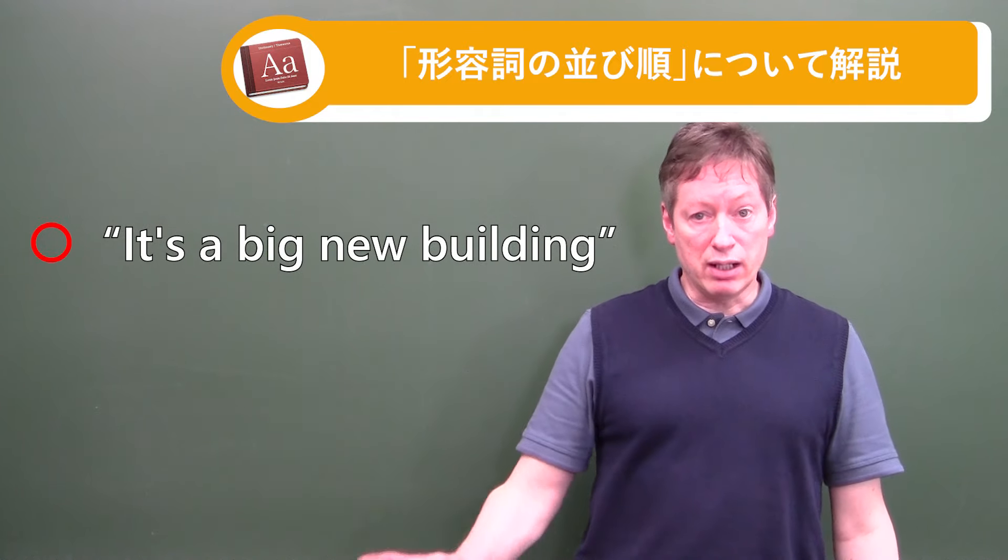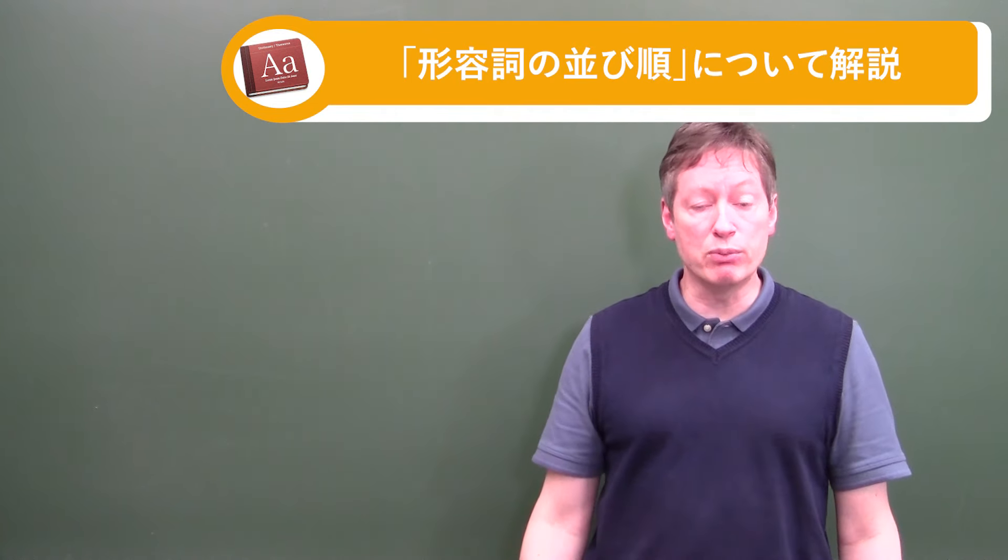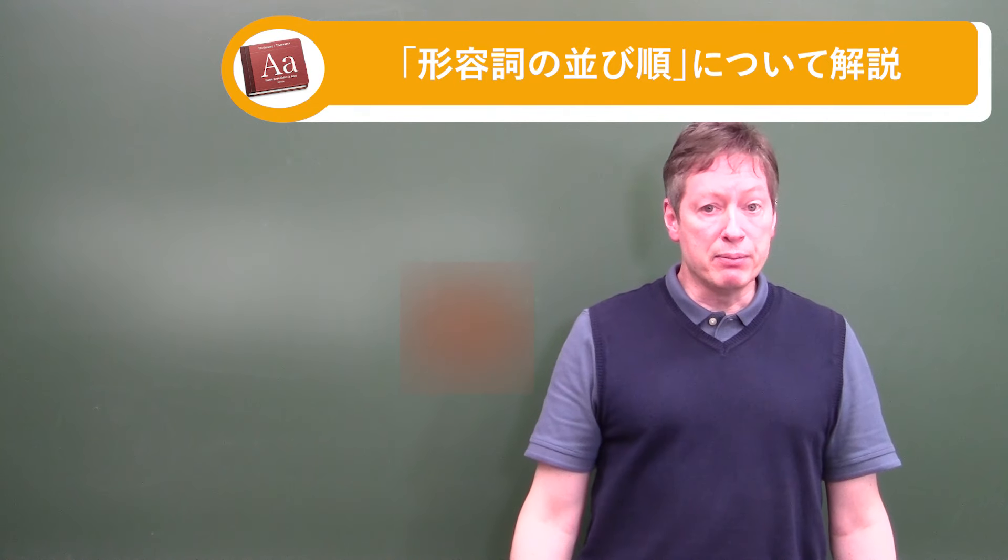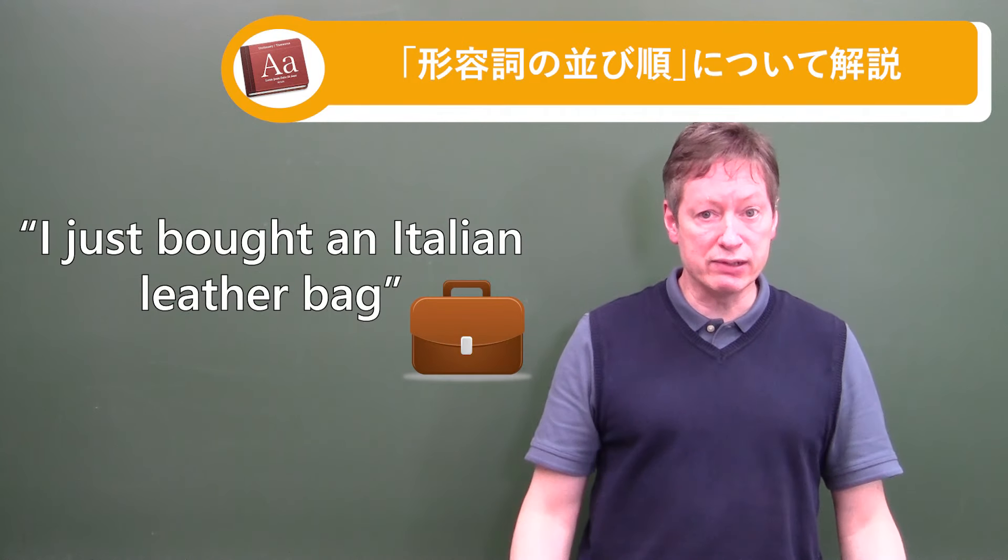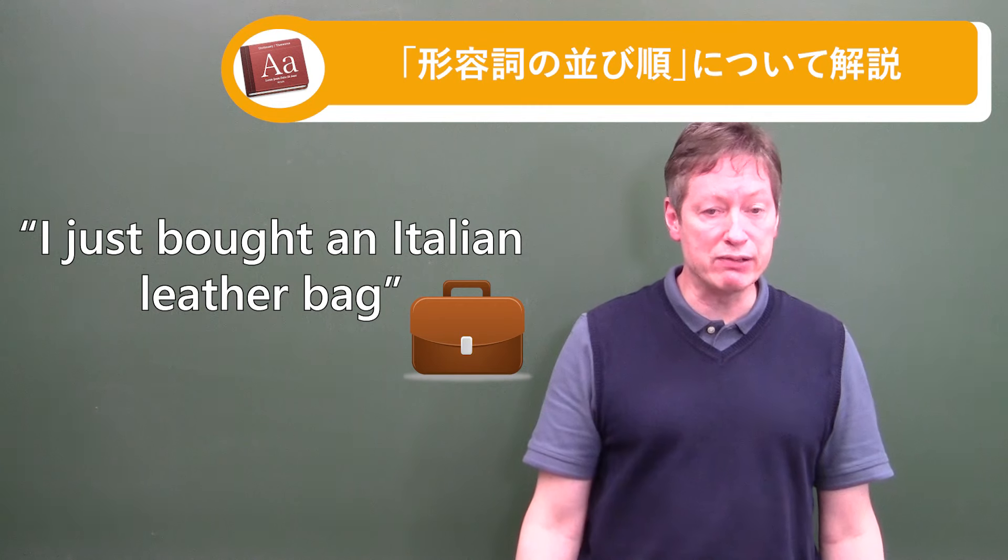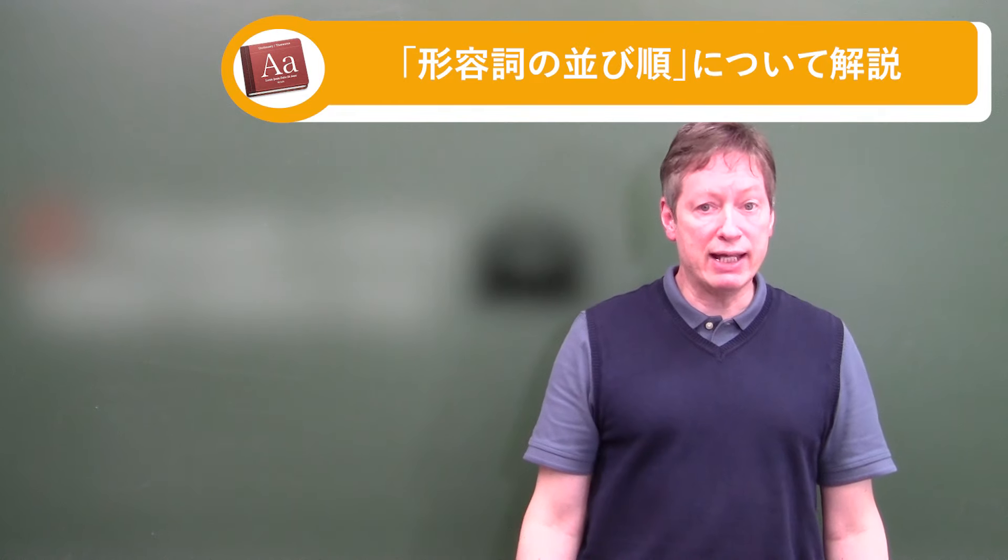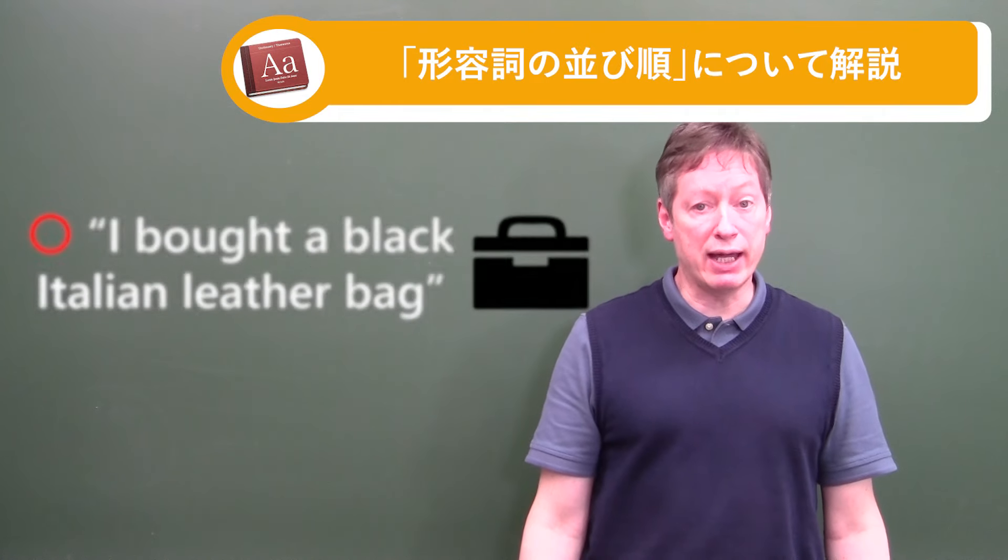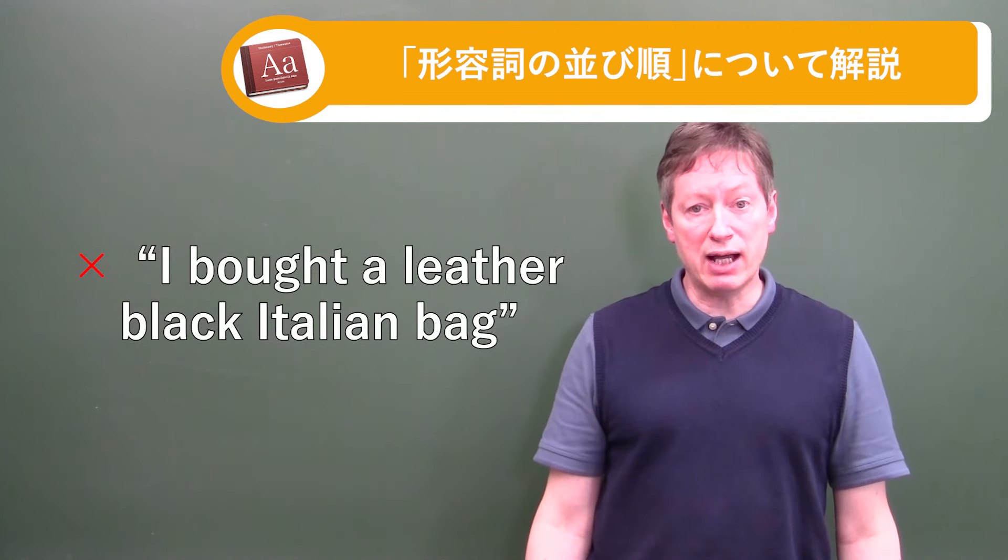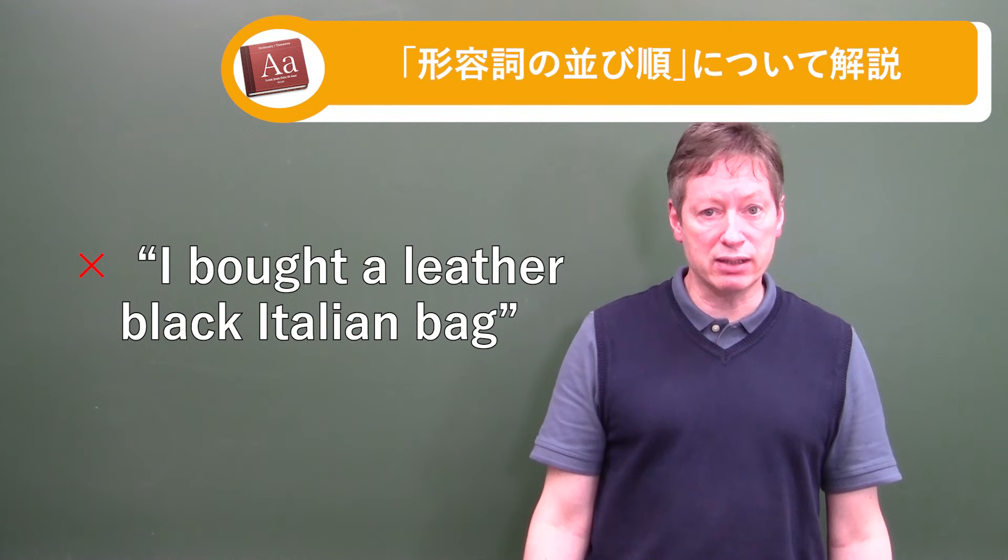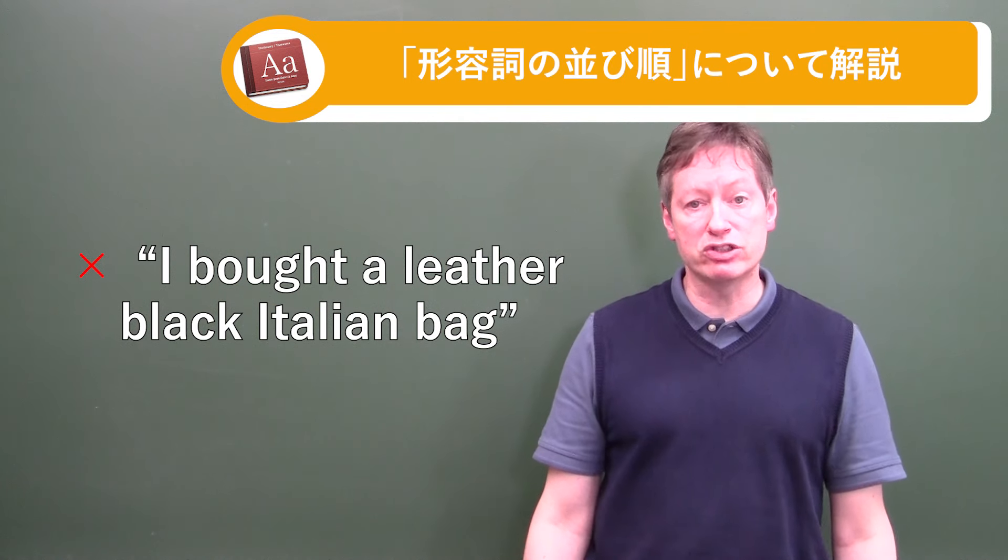I'll get to the more detailed part on the adjectives, how they would fit in there. Let me give you one more example first though. So I just bought an Italian leather bag, okay? I just bought an Italian leather bag. Actually I wanted to put the color in there but I forgot to put the color in. So I bought a black Italian leather bag. Black Italian leather bag. That's fine, that order there. But if I were to say I bought a leather black Italian bag, the order is off there and it would not be correct English on the adjective order.